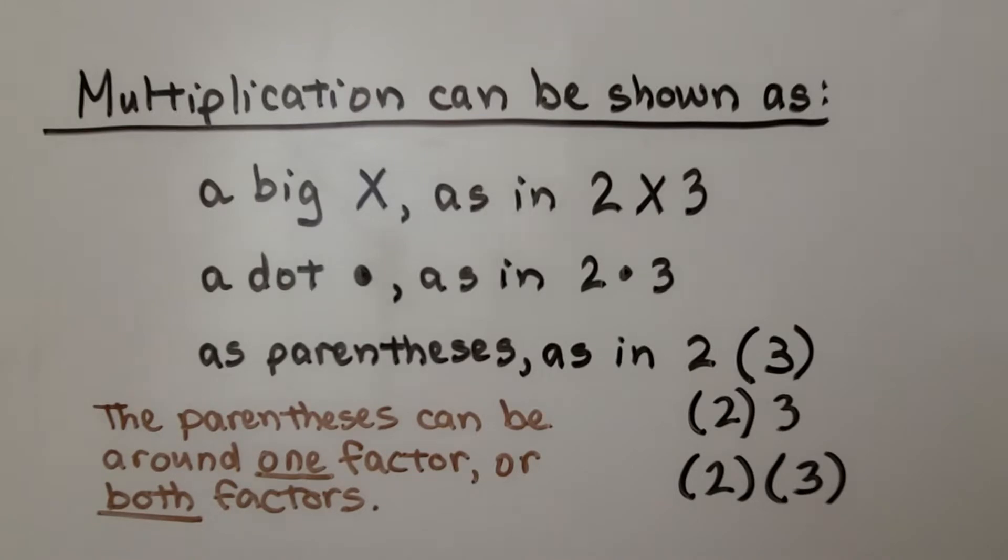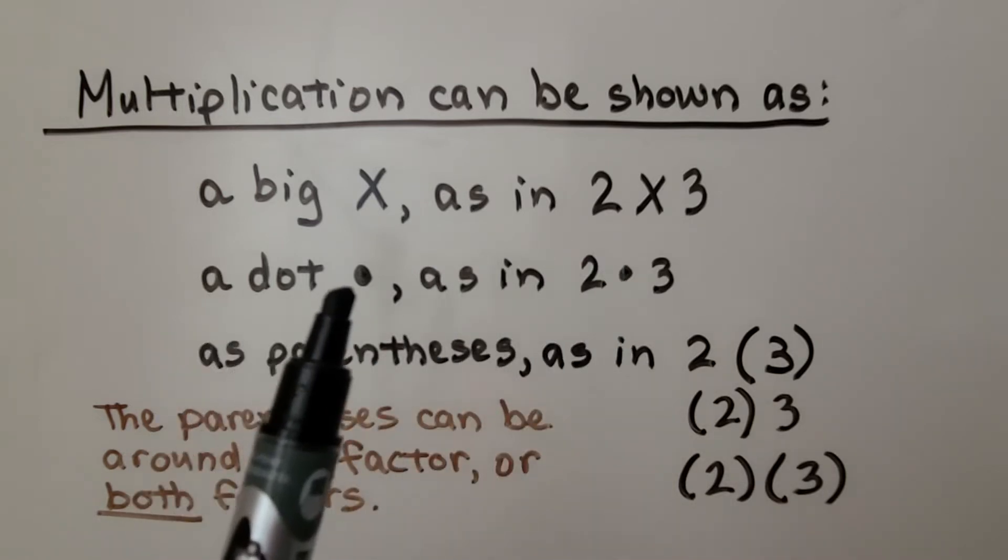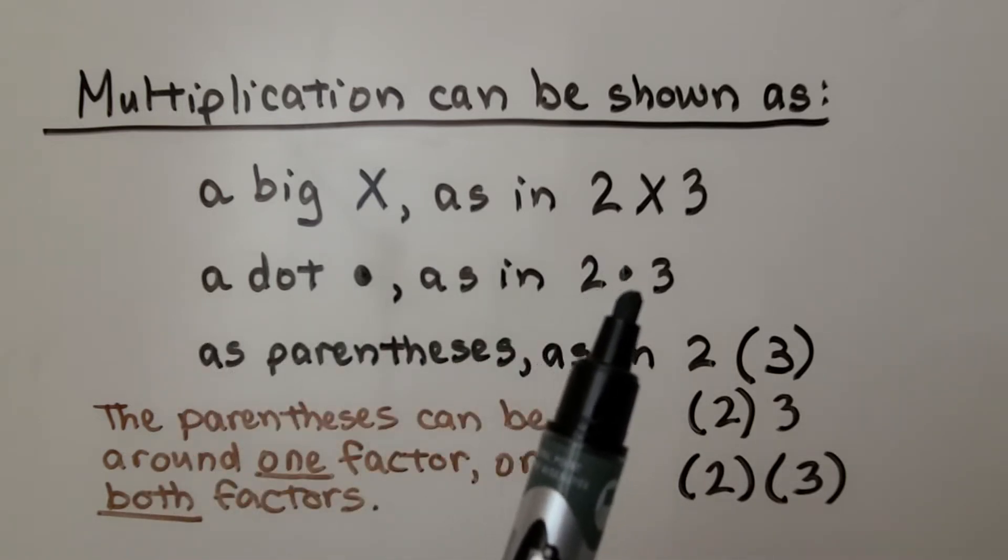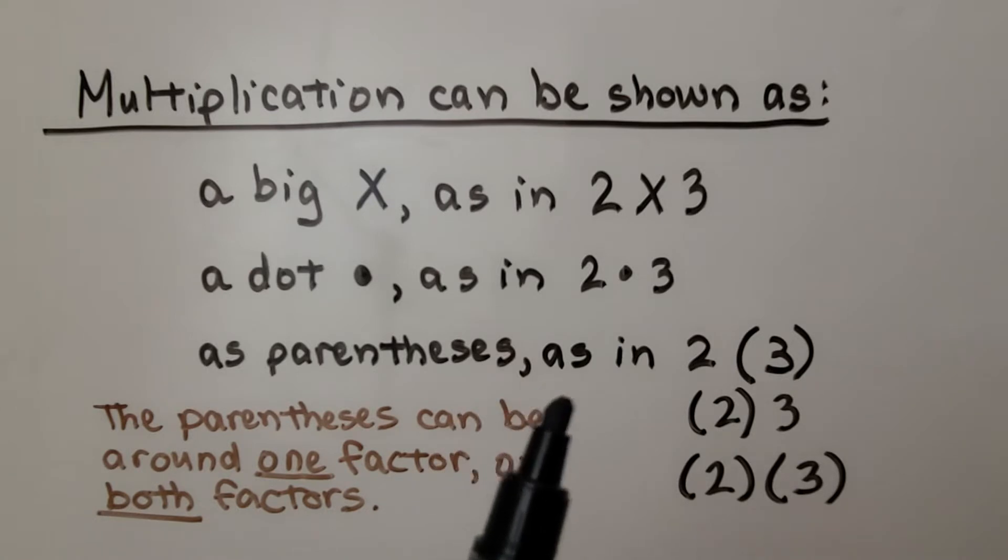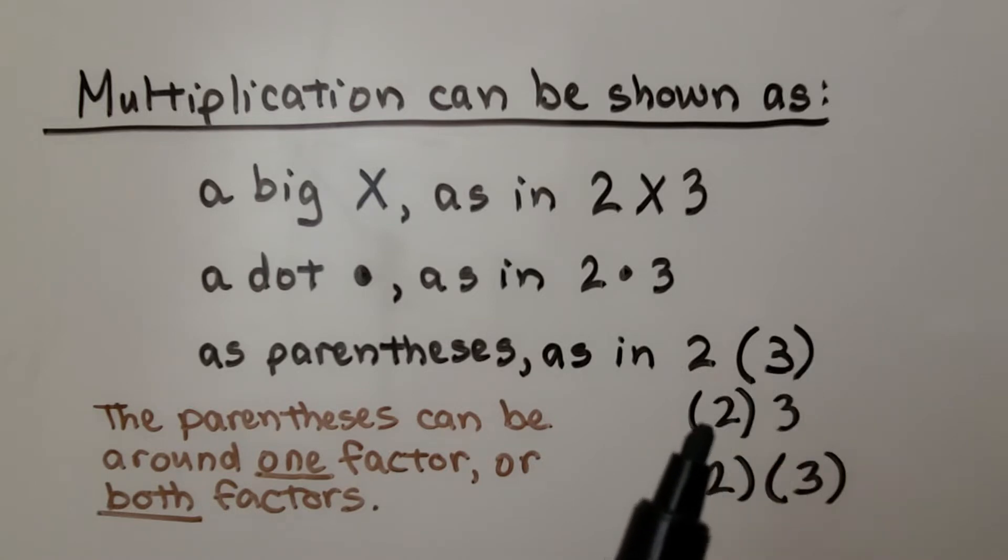I want to explain this quickly so you'll know what I'm doing. Multiplication can be shown as the big X, like 2 times 3, as a dot like we've been using, as 2 times 3, or as parentheses like this. The parentheses can be around one factor, doesn't matter which one, or it could be around both factors. And I'm going to start using parentheses for multiplication a lot more from now on.